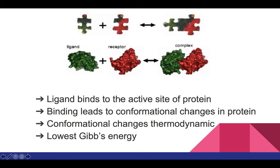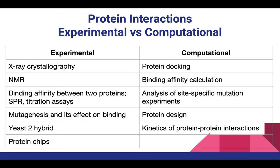When a ligand binds to a receptor complex, it conforms and facilitates the downstream processes from the binding. Ligand usually binds to the active site of a protein — the active site and binding site could be the same or different. Binding usually leads to conformational changes in the protein, producing output via thermodynamic changes in torsion angles. Docking usually requires the lowest Gibbs energy.